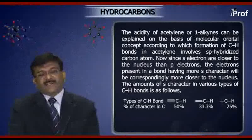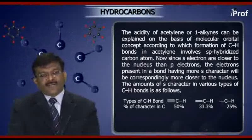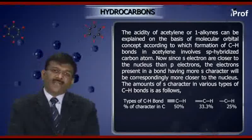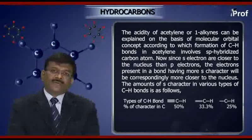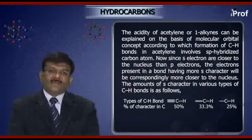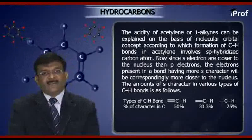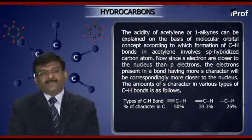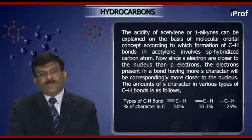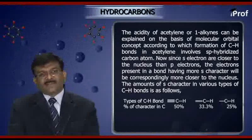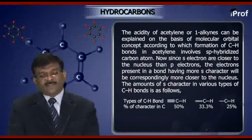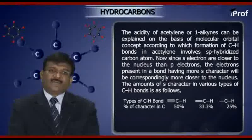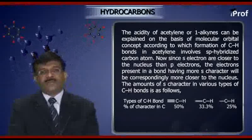The amounts of S-character in various types of carbon-hydrogen bonds are as follows. For the triple bond C–H, the percentage of S-character on carbon is 50 percent. For the double bond C–H, the percentage of S-character on carbon is 33.3 percent. And for the single bond C–H, the percentage of S-character on carbon is 25 percent.